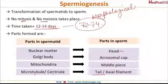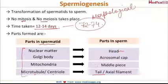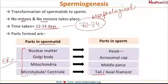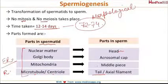Compared to a normal cell, what is lacking in the spermatid? The answer is the endoplasmic reticulum — especially the rough endoplasmic reticulum — which is lacking in a spermatid.